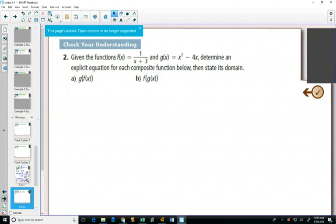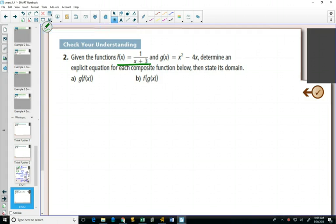Example 2, our functions get a little bit more difficult. f of x equals 1 over x plus 1 over x plus 3, and g of x equals x squared minus 4x.